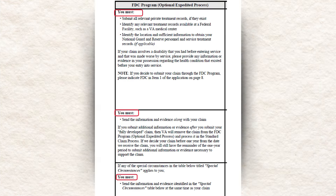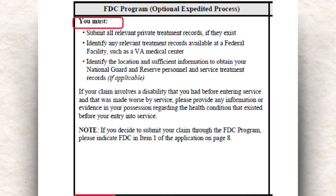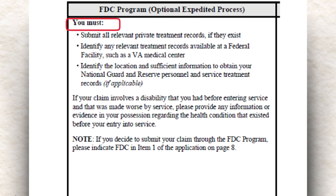Slide number three. Here's slide number three. This is information that you can find on the VA Form 21-526. Now the claim form itself is 15 pages long. There is a lot of information between pages one and seven, and the actual application starts on page eight. This section covers the FDC program as an optional expedited process.